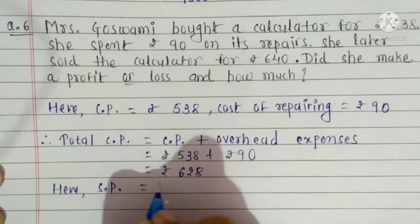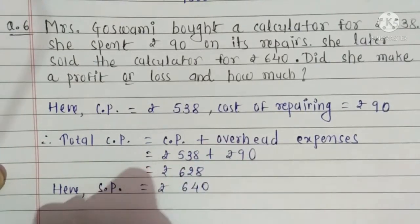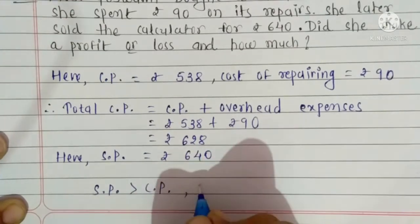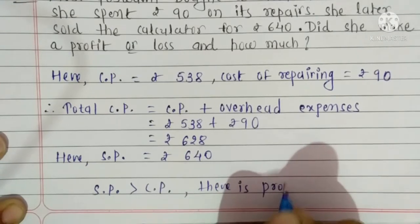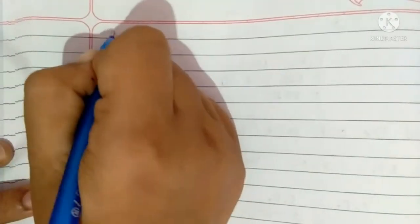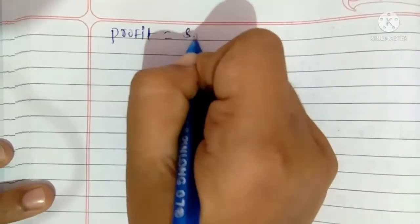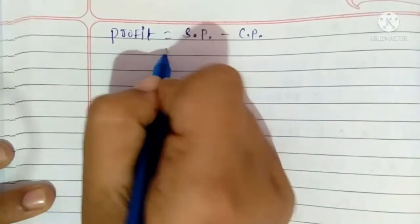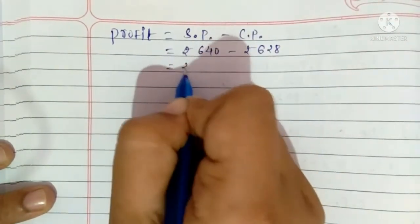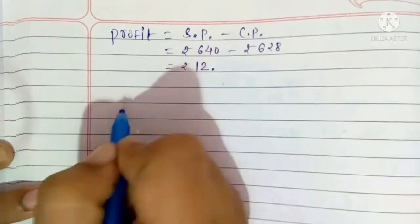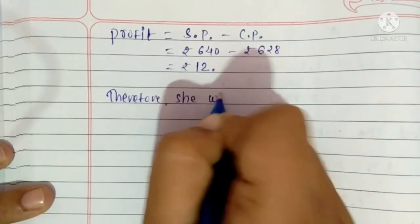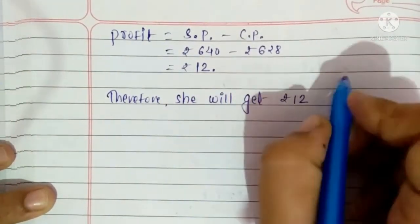Here, Selling Price is equal to Rs. 640. We observe that Selling Price is greater than Cost Price, so there is a Profit. Mrs. Goswami को profit हो रहा है. Profit = Selling Price − Cost Price = 640 − 628. On subtracting, we get answer Rs. 12. Therefore, she will get Rs. 12 profit.